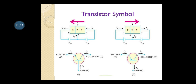That was all about the construction of the transistor. Now we will understand the transistor symbols in detail. There are two types: NPN transistor and PNP transistor. For NPN transistor, the arrow on the emitter terminal goes outward. If the arrow in the transistor symbol is going inside towards the base, it is called a PNP transistor. The arrow shows the current direction inside the transistor terminals. This is the schematic of the transistor.